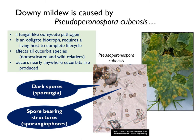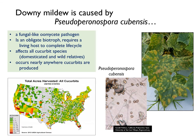P. cubensis produces unique lemon-shaped spores, or sporangia, on bifurcated spore-bearing structures called sporangiophores, that are key in making a proper diagnosis. P. cubensis is an obligate biotroph that requires a living cucurbit host to complete its life cycle.